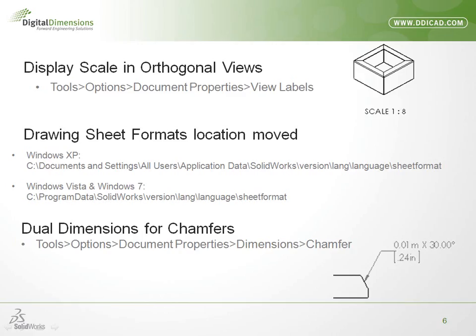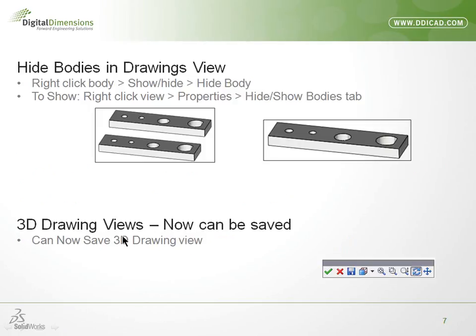The next item is multi-bodies. If you deal with more than one body in a single part file, we now have the ability to quickly hide a second body. One workaround I used to do was show the part on a drawing and then go through and hide all the edges — some of you have probably done that. This will definitely make your life easier. The other item we want to cover is the ability to save 3D drawing views. 3D drawing views have been around a while but you couldn't easily save them. Now that ability is here for good.